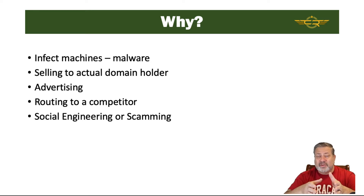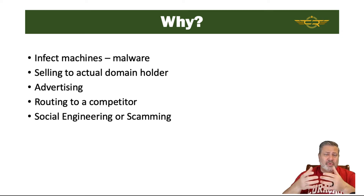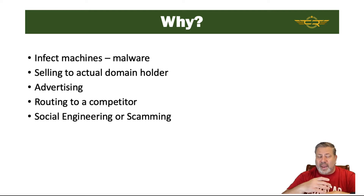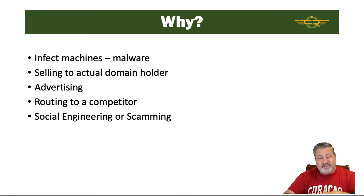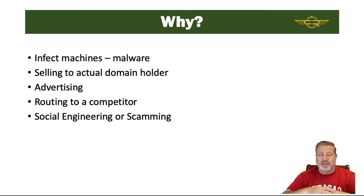People could also get a domain very similar to a popular name and try to sell it back to the domain holder. So if Coke has Coke.com, maybe we rush out and get Coke.co and try to sell it back — though the courts often rule in favor of the actual brand holder. We could also use this for advertising, loading a site with pay-per-click advertisements. If it's close to a famous site with lots of traffic, a typosquatted URL might get a lot of traffic and revenue too.